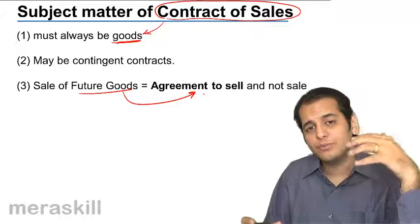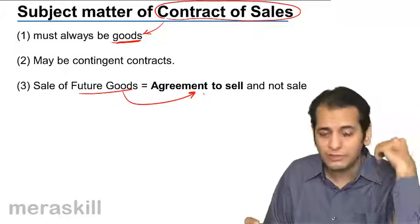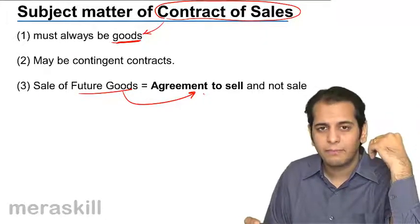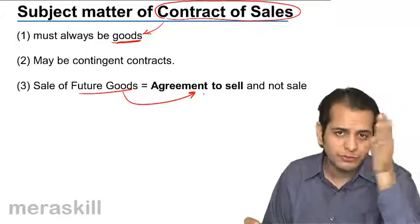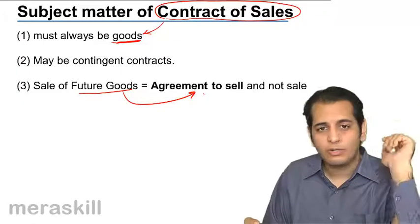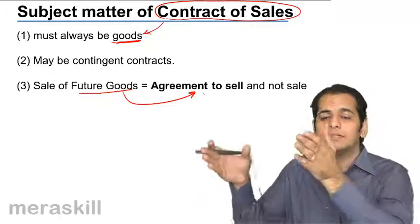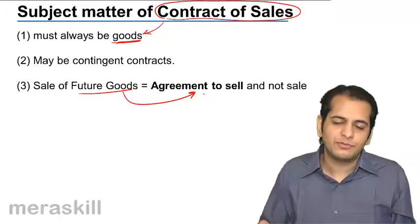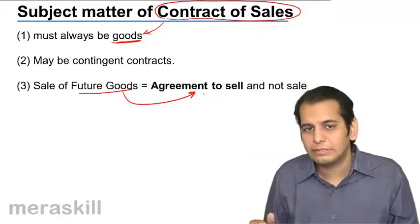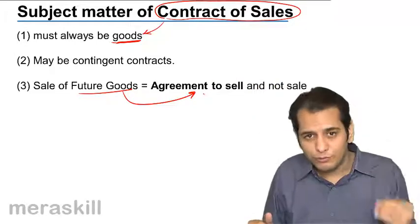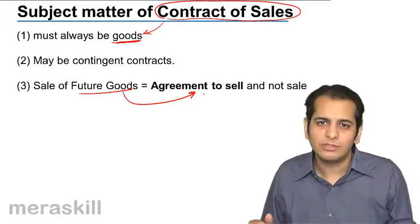How can you transfer the ownership of shoes which have not yet been manufactured? You cannot transfer the ownership of shoes which have not yet been manufactured. Once they will be manufactured, the ownership can be transferred — that is, the ownership will get transferred on a future date. That means for future goods, there will always be an agreement to sell.